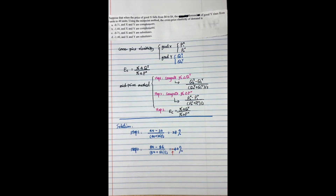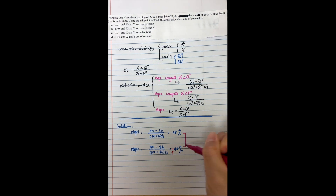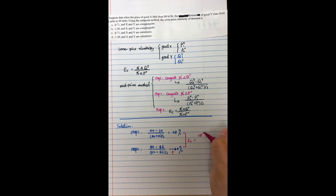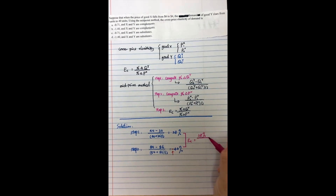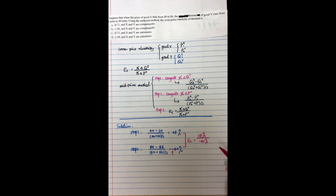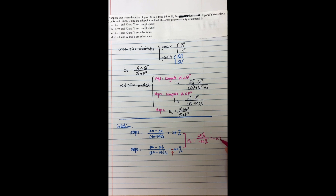Based on our calculations, the cross-price elasticity equals the percentage change in demand of good Y — 28% — divided by the percentage change in good X's price — negative 40%. So the cross-price elasticity of these two goods is approximately negative 0.7. This is the answer for cross-price elasticity.